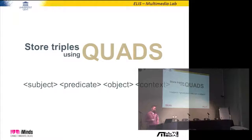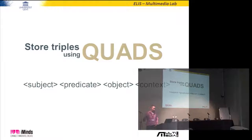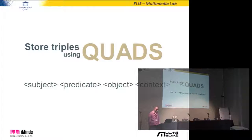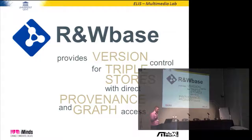We store the triples as quads — normal triples as subject, predicate, object — and versioning is stored as context. For all the additions, we use even numbers: zero, two, four. If we delete something, we give it an odd number: one, three, five. In the end, RawBase provides version control for triple stores with direct provenance — which is very important for you — and direct graph access.